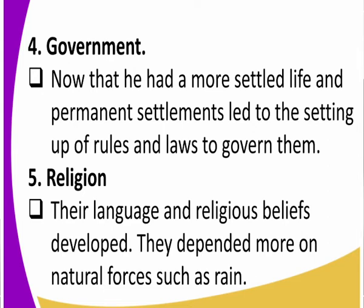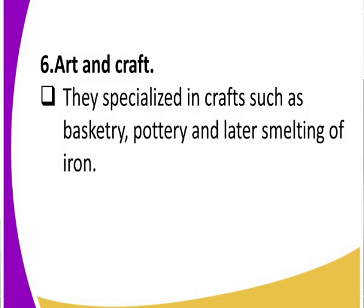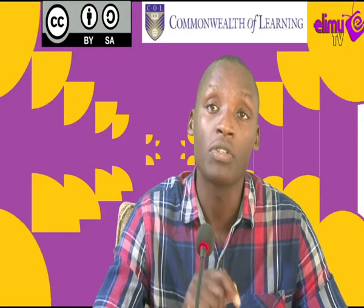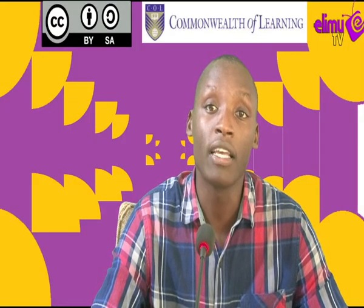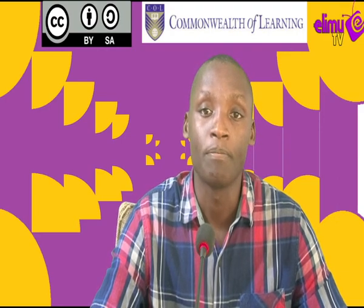Regarding art and craft — what about the paintings, the basketry, and the pottery? They specialized in crafts such as basketry, pottery, and later the smelting of iron. With iron smelting, they also made more improved tools, such as hoes, jembes, fork jembes, and more specialized spears and weapons.